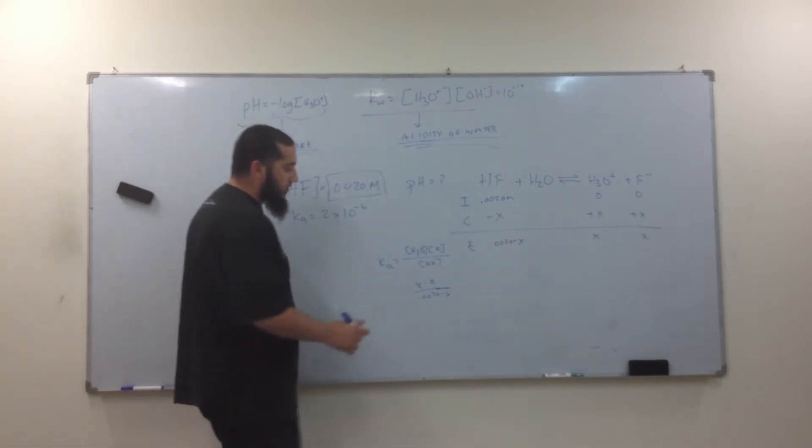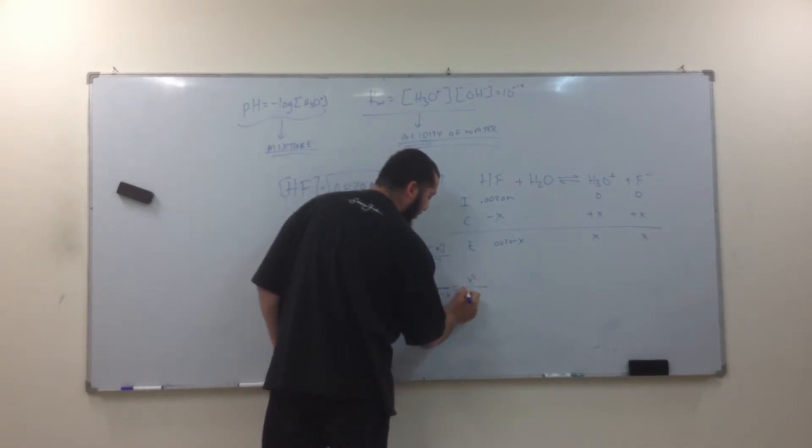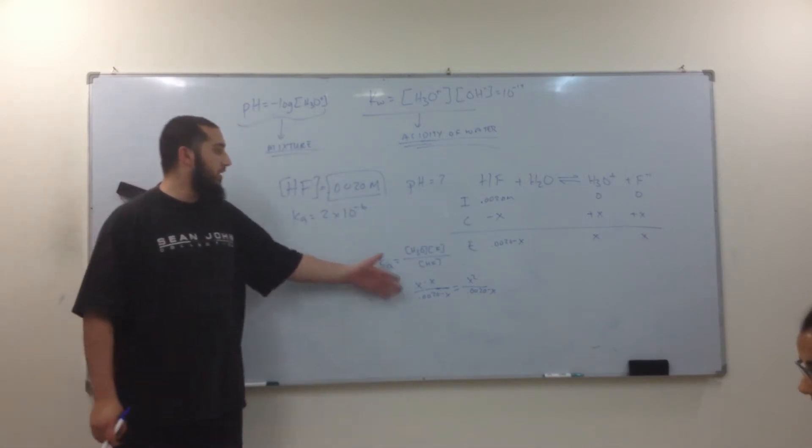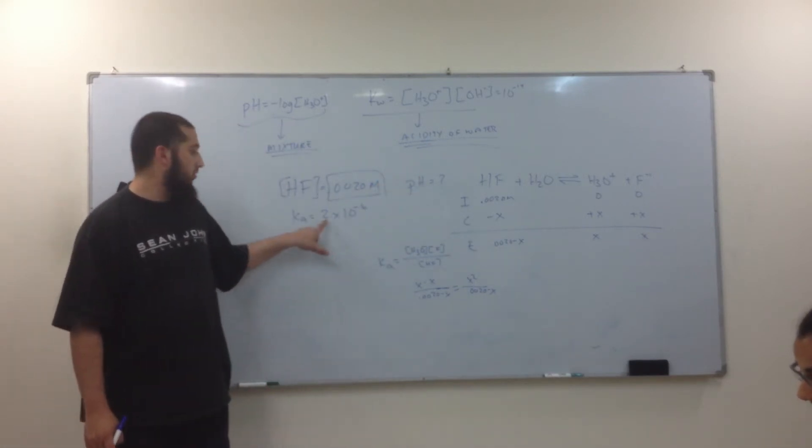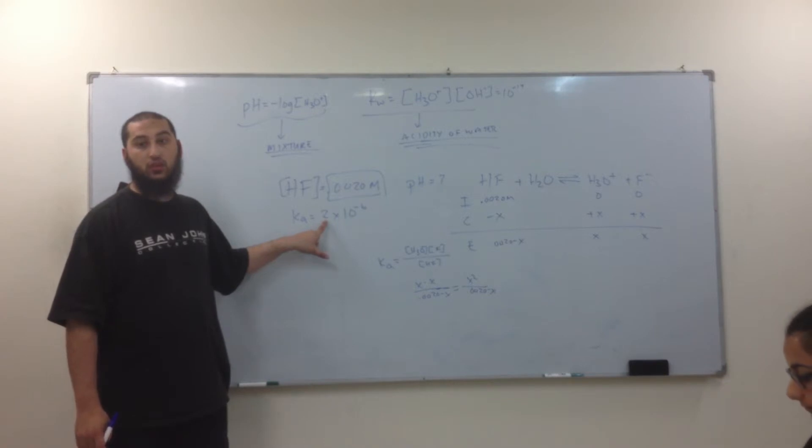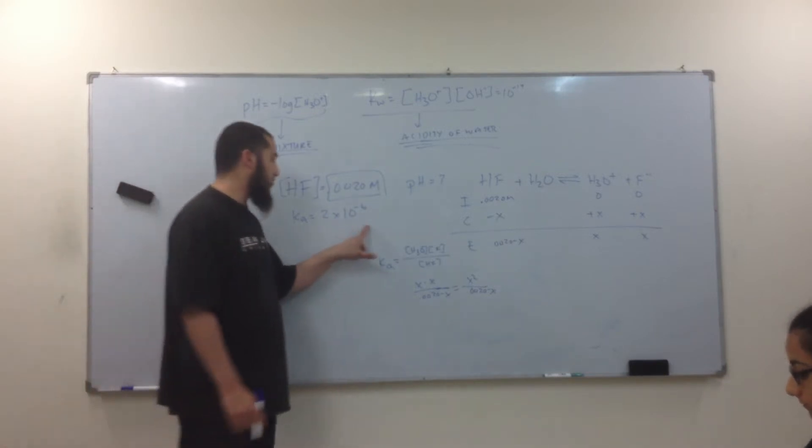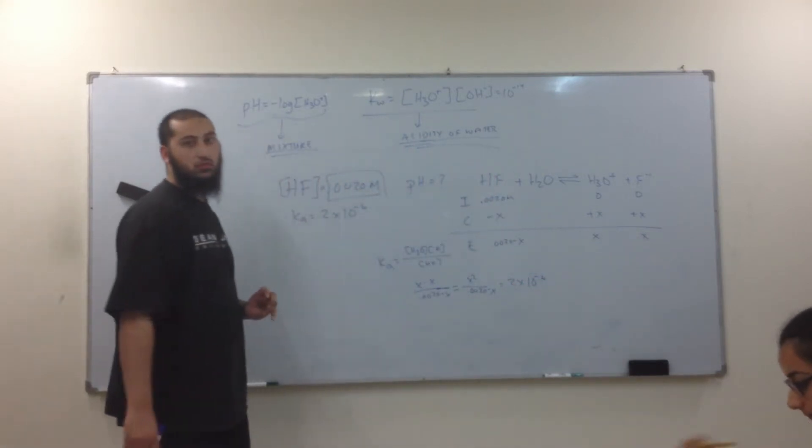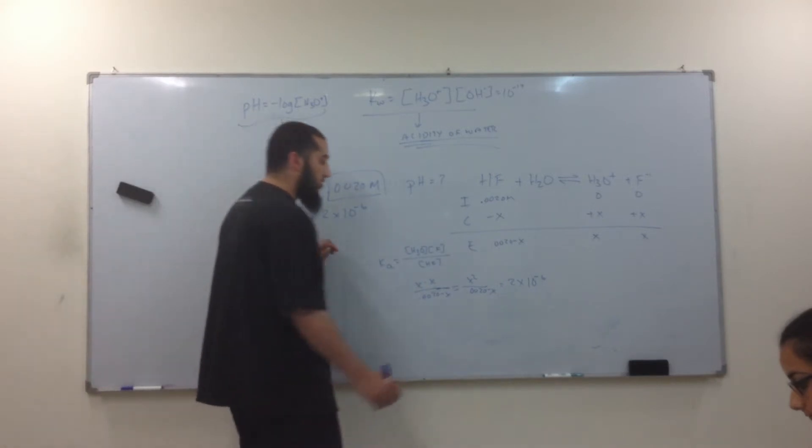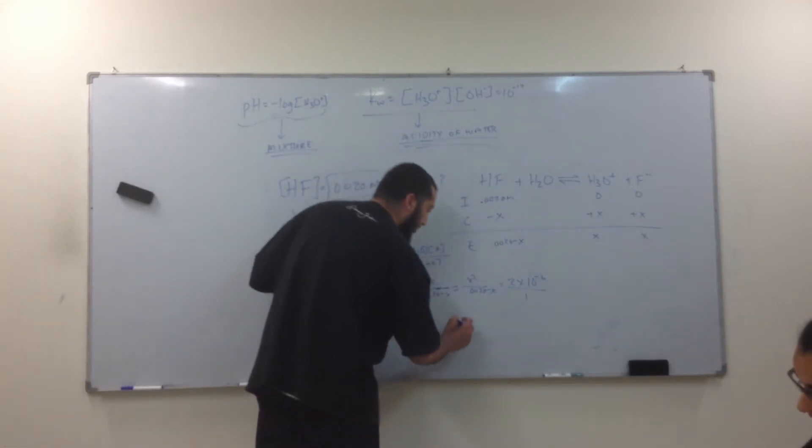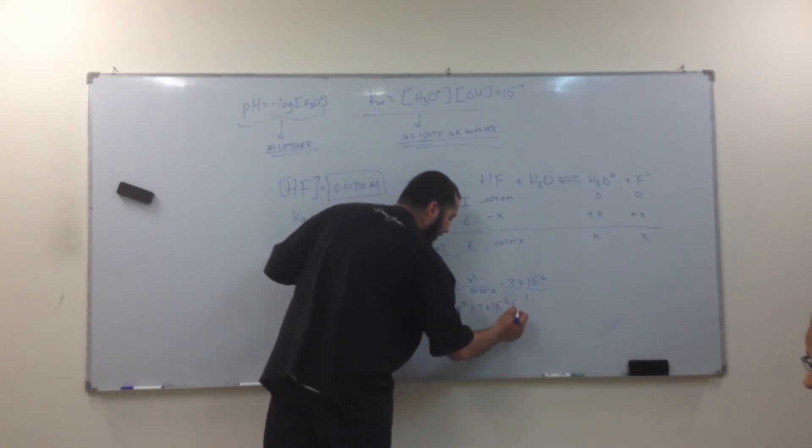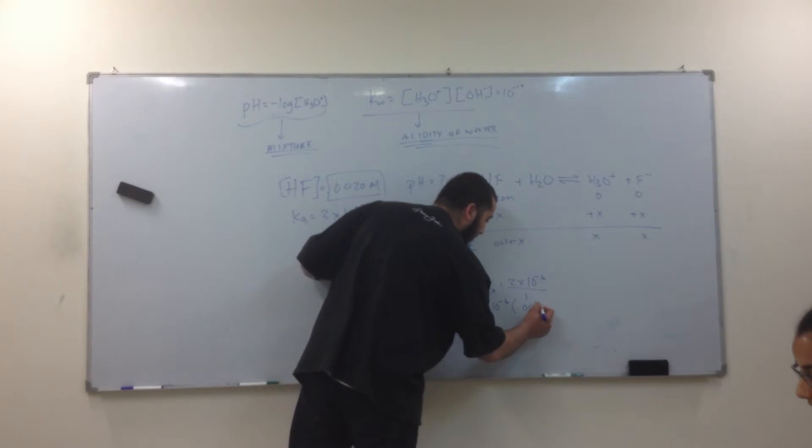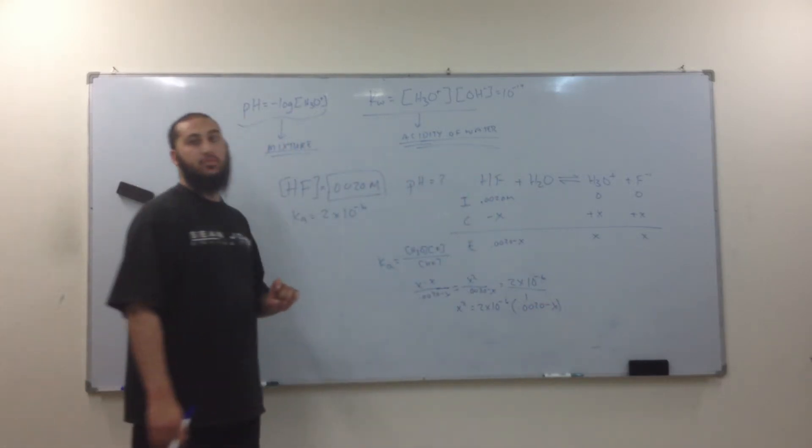So this equals X squared over 0.0020 minus X. Now, what is the Ka of HF equal? 2 times 10 to the negative 6. What are we going to do now? Cross multiply. So it's going to be X squared equals 2 times 10 to the negative 6 times 0.0020 minus X. Probably forget about the X.